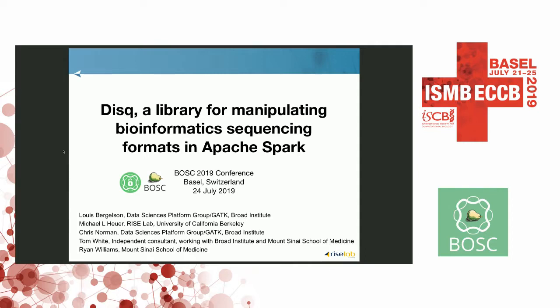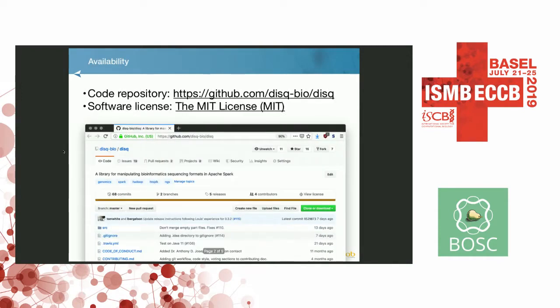My name is Michael Hoyer. I'm with UC Berkeley. Today I wanted to talk about DISC, a library for manipulating genomics sequencing formats in Apache Spark. Right up front, code availability for DISC: we're on GitHub, and the open source license is MIT.